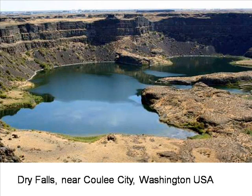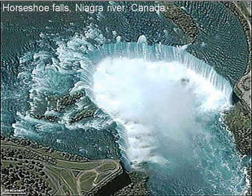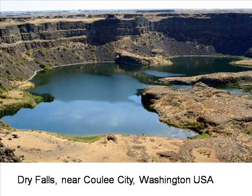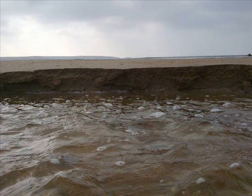These dry falls in Washington, USA have large plunge pools at their base. These can only have been produced by a very large torrent coming over the edge of the cliff. There is no flow of water over the cliff today, and therefore present-day conditions provide no mechanism for creating the plunge pools. Something completely different happened in the past to produce this feature, and not so long ago, because it is perfectly preserved.